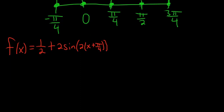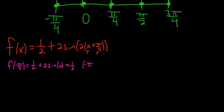Let's plug in all the numbers one at a time. Let's look at f(-π/4). You've got to be very careful here — this is where it's easy to mess up. This is 1/2 plus 2 sine, and our x is -π/4. When you add it to π/4, it's going to be sine of 0. Sine of 0 is 0, so this is just 1/2. Our first ordered pair is (-π/4, 1/2).